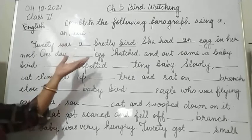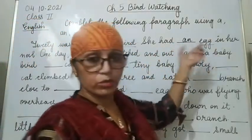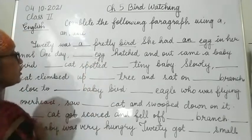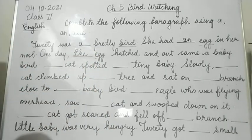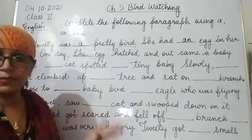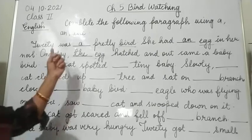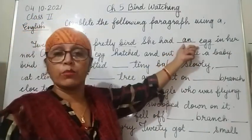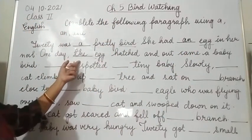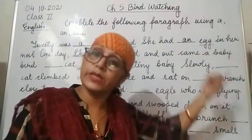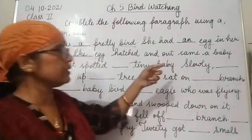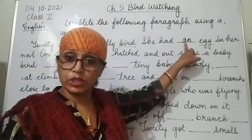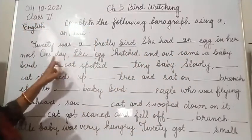Next, 'one day blank egg hatched'. Now egg again - of course 'e' is a vowel, but here we are talking about a specific egg, Tweetie's egg - the one we already mentioned. She had an egg, and now we are talking about that same egg. Since we have already referred to it, we will write 'the'. One day the egg hatched.